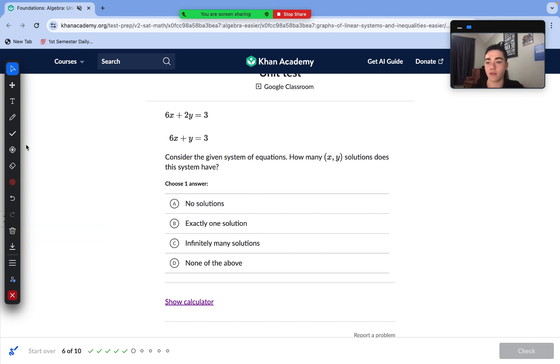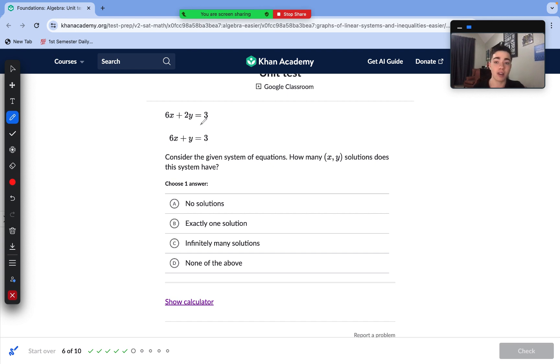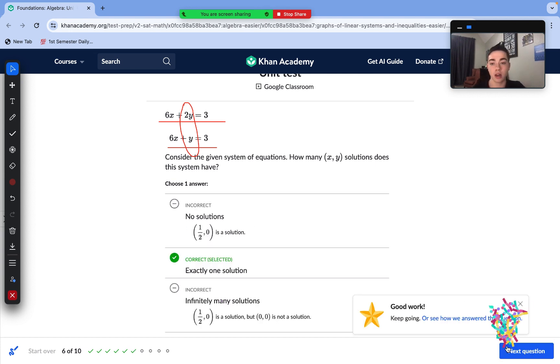Moving to our next one here, we need to find how many solutions does the systems of equations have. A really good way to check this is that with infinite solutions, every term is going to be the same. We can see here every term is not the same. We have different coefficients for our y variables. With no solutions, we're going to have our coefficients for our variables being equal to each other, but our constants being unequal to each other. We can see here 2y and y are once again not equal to each other. So that only leaves the last scenario, exactly one solution, and that is our answer.